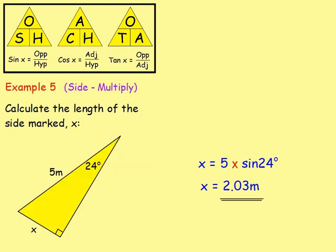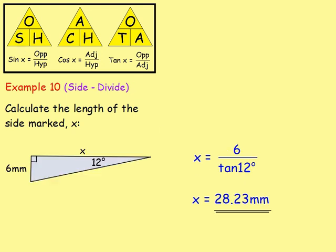There were also other cases where we would multiply. For this one, we had to work out the opposite and we had the hypotenuse. Because we were working out O, we had S and H beside one another, and because they were beside each other, we multiplied — so it's the hypotenuse times by the sine of the angle. With another example, it was tan we were using, but it was the adjacent we had to work out. So because it was the adjacent, it's the opposite divided by the tan of the angle.